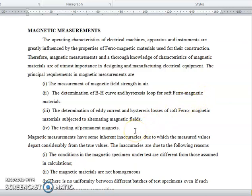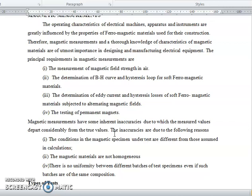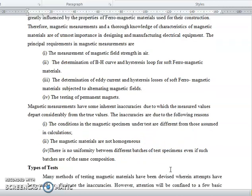Determination of eddy current and hysteresis loss of soft ferromagnetic materials, testing of permanent magnets. The magnetic measurements have some inherent inaccuracies due to which measured values depart. The inaccuracies are due to the following reasons: the conditions in the magnetic specimen under test are different from those assumed in calculations; magnetic materials are not homogeneous; there is no uniformity between different batches of test specimens even if such batches are of the same composition.